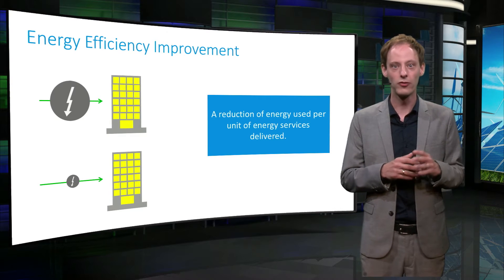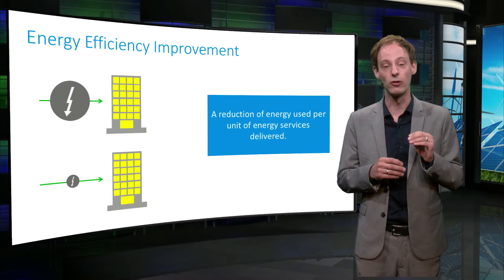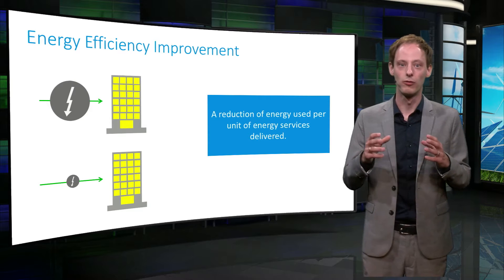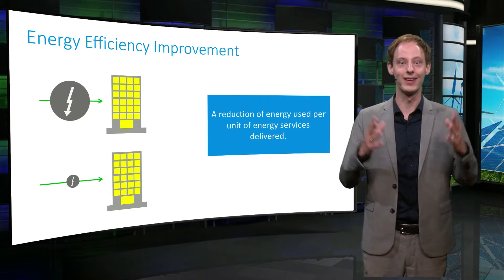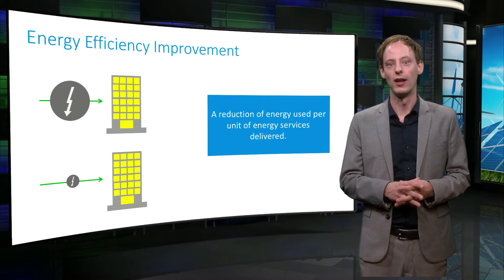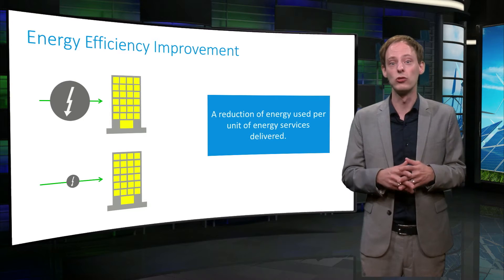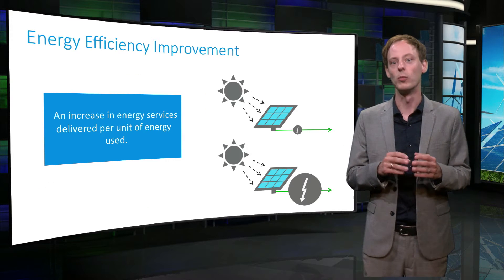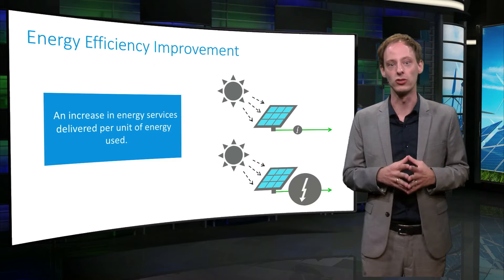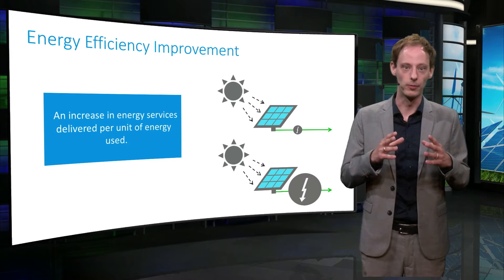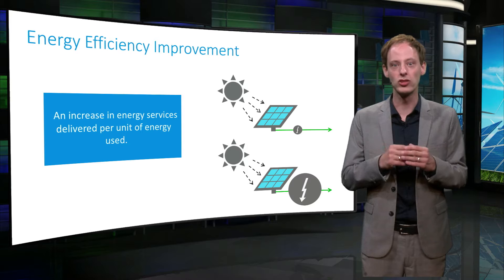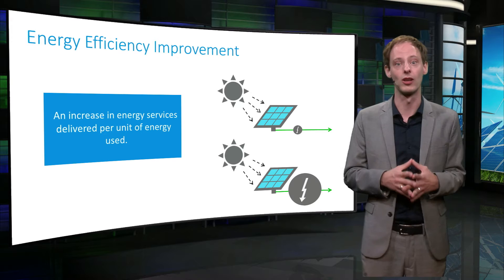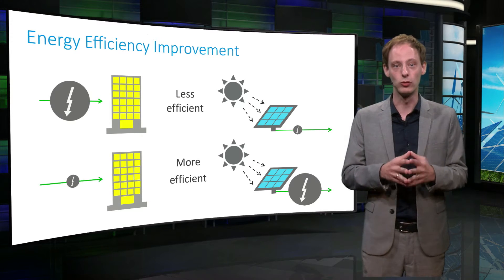Let's define this. We define energy efficiency improvements as a reduction of energy used per unit of energy services delivered. For example, this could be a reduction in energy used to provide lighting to an office building. The energy service doesn't change here, we just use less energy to provide it. A different way of looking at it would be that you can deliver more services with the same amount of energy. Another example: the improved efficiency of solar panels would result in more electricity produced per unit of incoming sunlight. So it's about making better use of the energy.